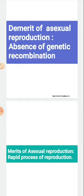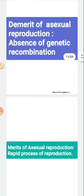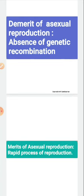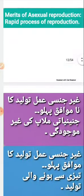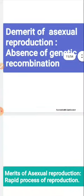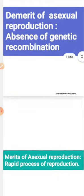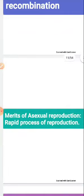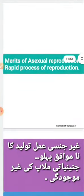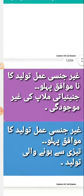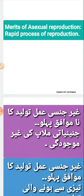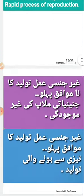The demerit of asexual reproduction is the absence of genetic recombination. Because a single parent is involved, there is no genetic mixing, which means there is no possibility of evolution. One merit is that it is a very rapid process of reproduction — it takes very little time, and many organisms can be produced in a short time.